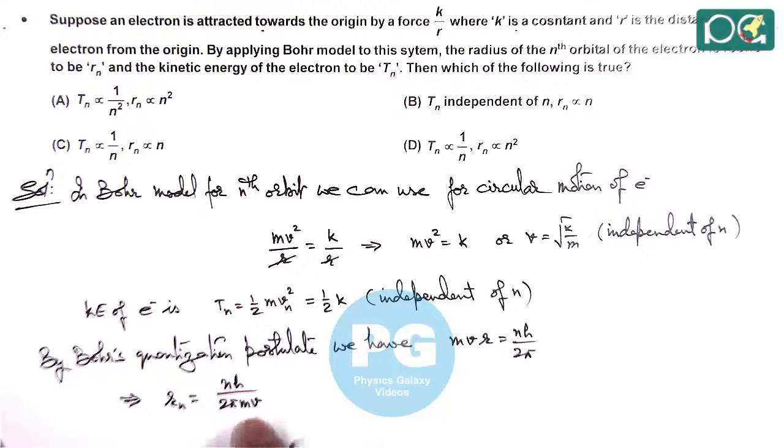As we already discussed that the speed is independent of n, so the denominator does not depend on n. So it gives us rn is proportional to n.